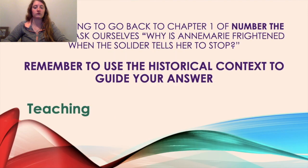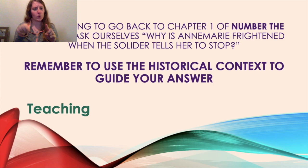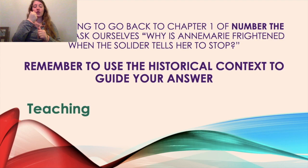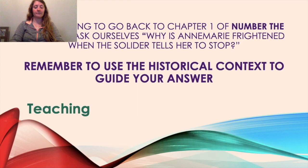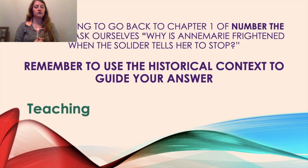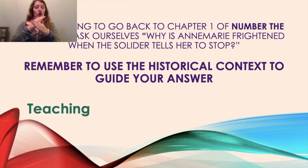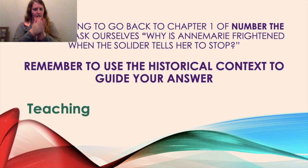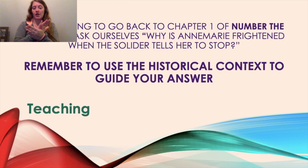We are going to go back to chapter one of Number the Stars and ask ourselves: why is Anne-Marie frightened when the soldier tells her to stop? In the first chapter, the girls are running down the streets, practicing for an athletic meet on Friday. When they turn around the corner, the soldier yells 'halt.' When I was a kid and a crossing guard would tell me to stop, I was maybe embarrassed, but not frightened — I just thought, oh okay, no big deal.